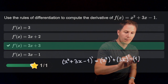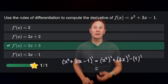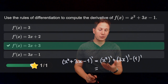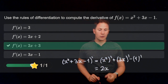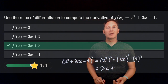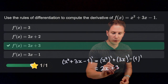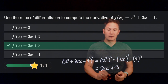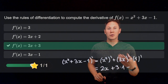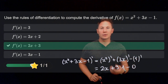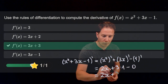For the first term, we apply the power rule with n equals 2 to get the derivative of x squared being 2x. For the next term, we combine the constant multiple rule — factoring out the 3 — with the basic derivative that tells us the derivative of x is 1. Finally, we subtract the derivative of a constant, which is 0. So to summarize, we get 2x plus 3.